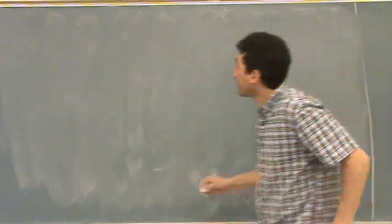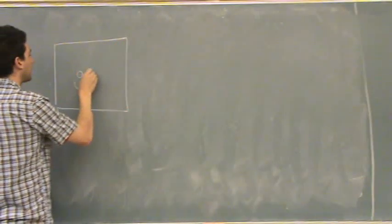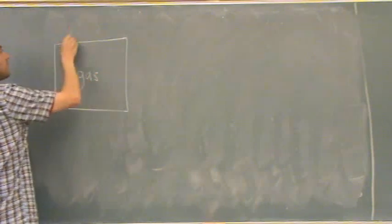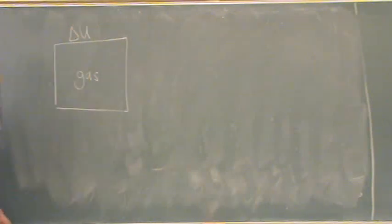So, chapter 7, number 47. We have a gas. I'll just put the gas in a container. Gas. It has a given delta U, it says in the problem.